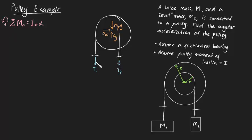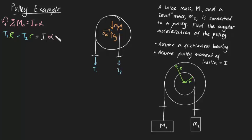T1 produces a moment of T1 times its perpendicular distance, which is capital R — that's the advantage of a circular pulley. The moment produced by T2 is negative because it acts in the clockwise direction, so it'll be negative T2 times its perpendicular distance, lowercase r. That gives us T1·R − T2·r = IO·α, where IO is the moment of inertia of the pulley, which is just I, times angular acceleration alpha. We've got three unknowns in one equation — T1, T2, and alpha — so we need more equations.